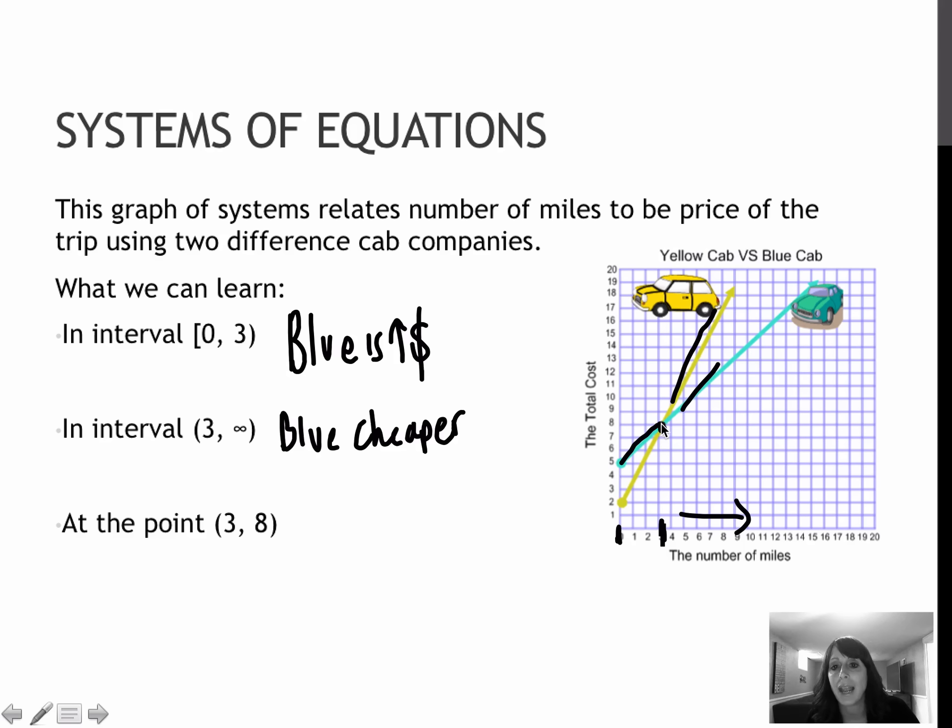At the point (3, 8), what do we know? We know at (3, 8), it's going to be the same price for either cab company. So if I were going exactly three miles, it wouldn't matter which cab company I chose. At the point (3, 8), both cab companies would cost eight dollars.